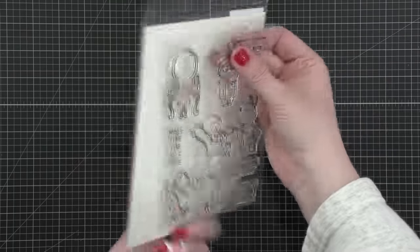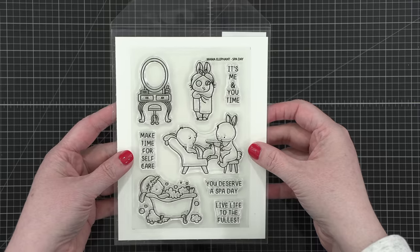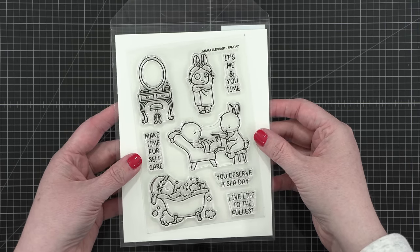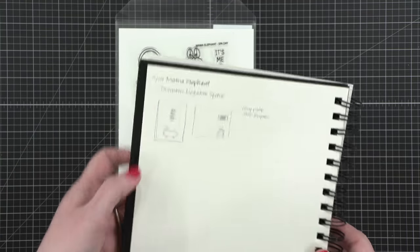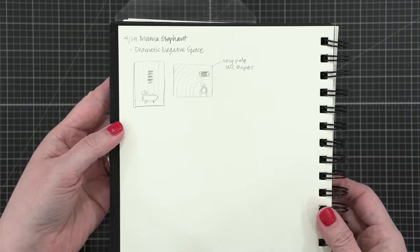Today I'm using the Spa Day Stamps and Dies from Mama Elephant to create two cards. Now the idea behind these cards came while I was sketching out a plan for the cards. I thought, you know what, what if I had dramatic negative space on each card?